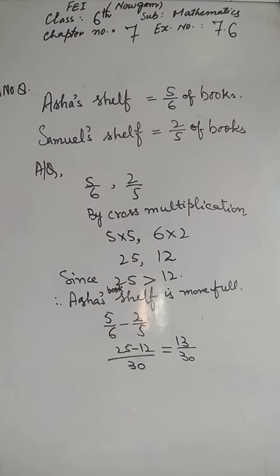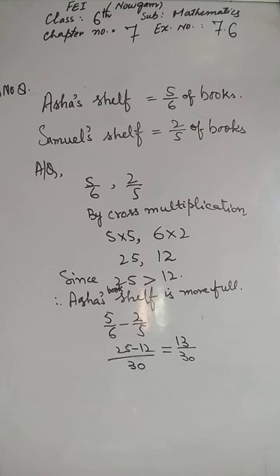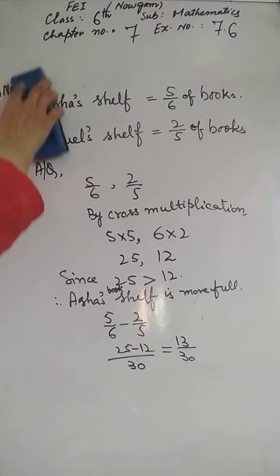Question number 9: Jaidev takes 2 and 1/5 minutes to walk across the school ground. Rahul takes 7/4 minutes to do the same. Who takes less time, and by what fraction? Jaidev ne 2 1/5 minutes liye school ground ka chakkar lagane mein, aur Rahul ne 7/4 minutes. Bilkul same type ka question hai.